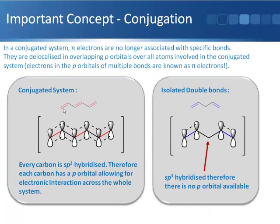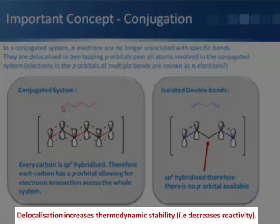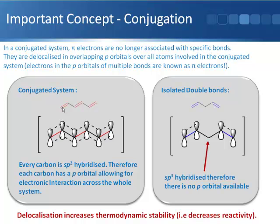That's why this is a very specific system. If you see this motif, these double bonds are conjugated. The key point is that conjugation and the delocalization of electrons within this system increases the thermodynamic stability, and it's a really key concept to keep hold of.